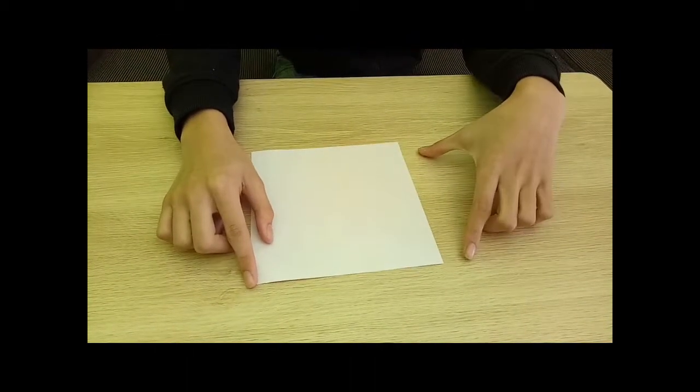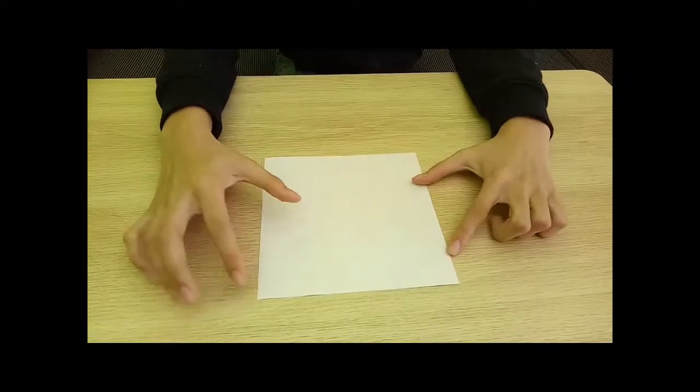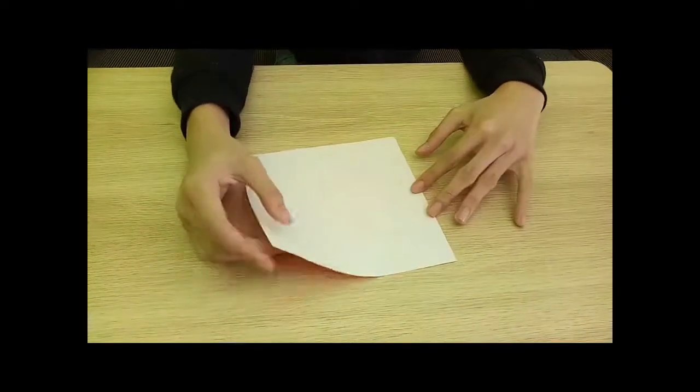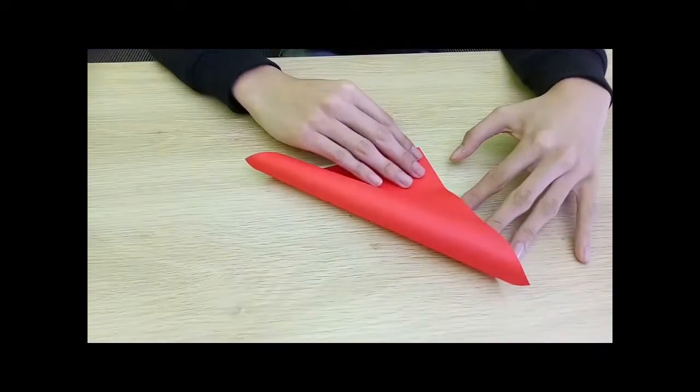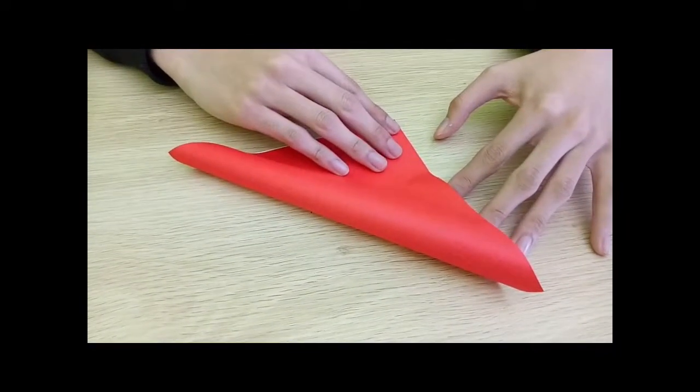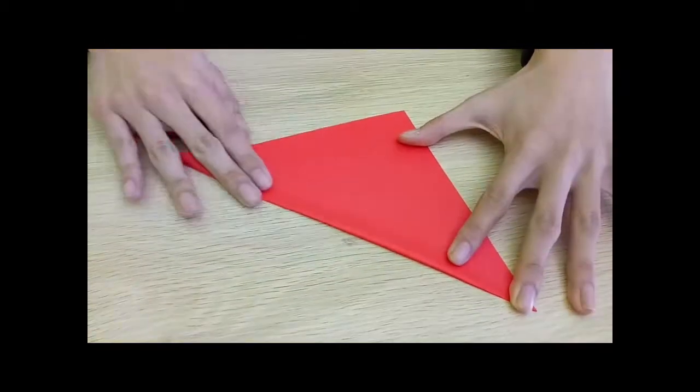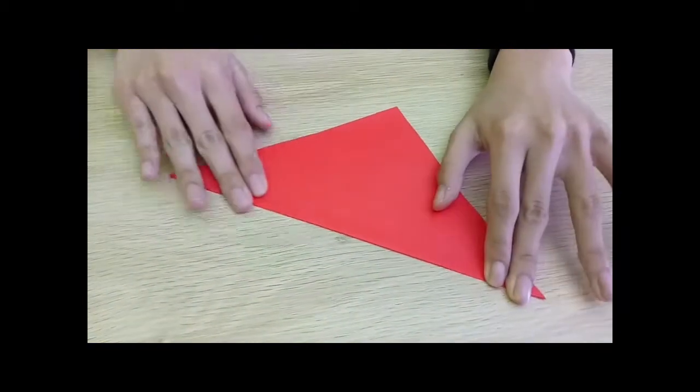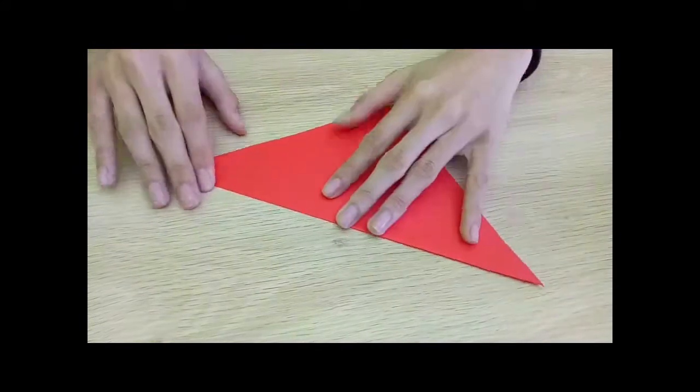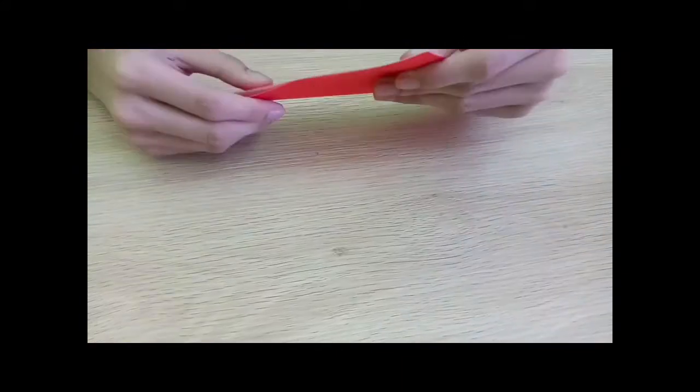You need a square piece of paper. Get one side and go to the other corner, so it should look like this. Make sure it's even.